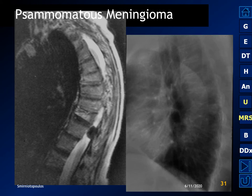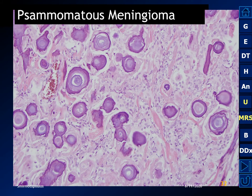Psammomatous meningiomas — the ones that are chock-a-block full of microcalcification — are much more common in the spine than intracranially. They often have such low signal that they can be identified on MR, CT, and even plain radiograph. The psammomatous meningioma is full of microscopic concentric calcifications called psammoma bodies. Any meningioma can have a couple of psammoma bodies, but when they're piled up it is called a psammomatous meningioma.